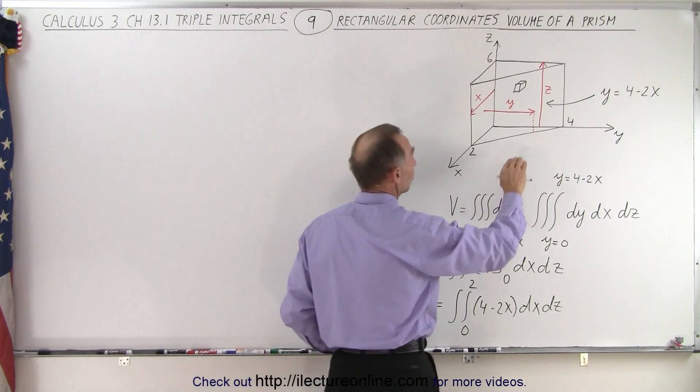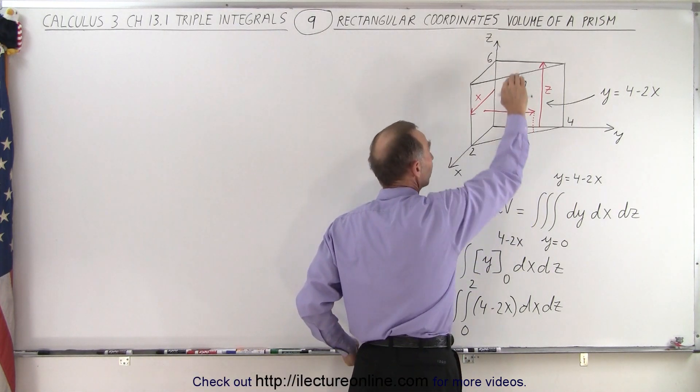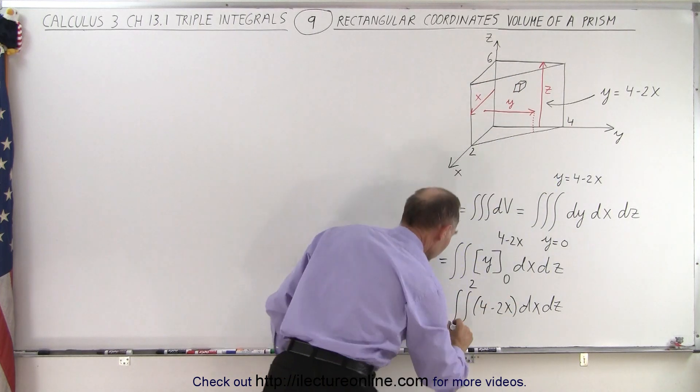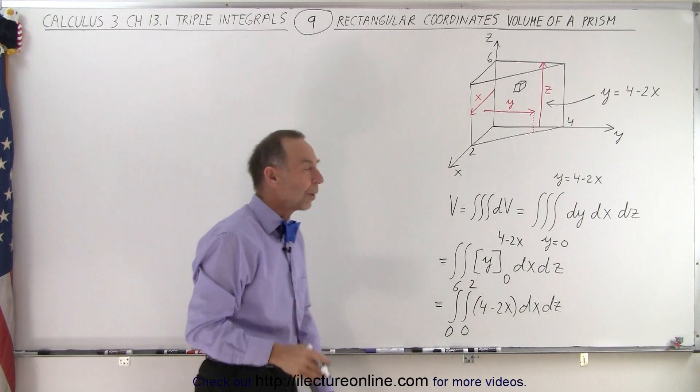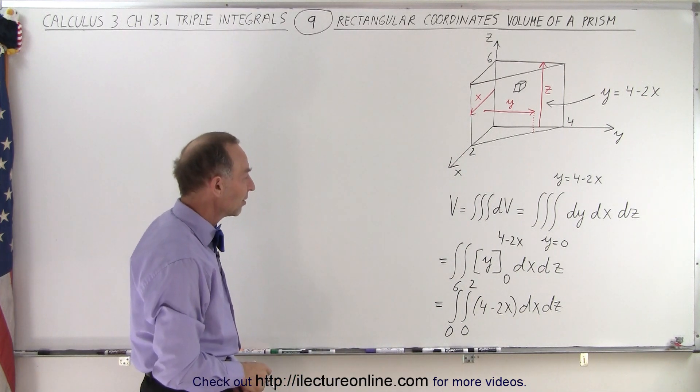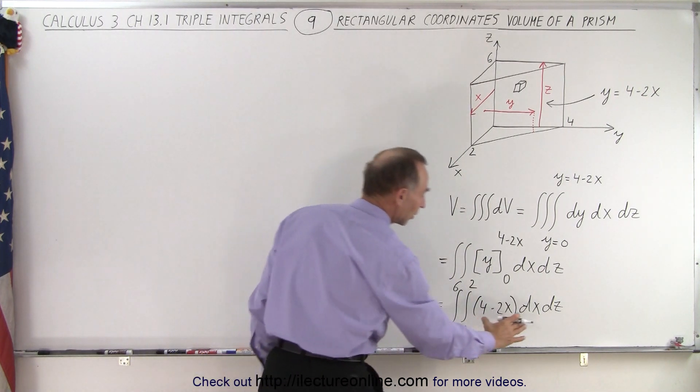And then if you look in the z direction, notice z can be from 0 all the way to 6. There's no limits there at all. So 0 to 6, no limitations in the x to the y direction for that. So those are going to be the z limits. So first we're going to integrate over dx.